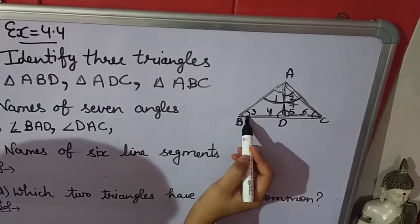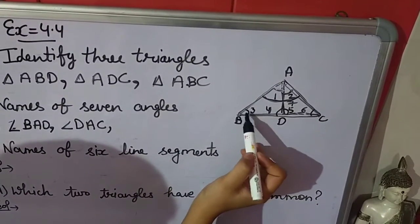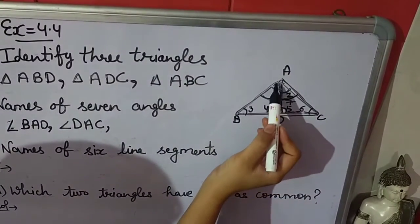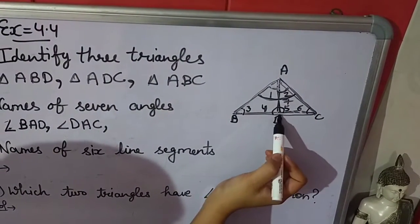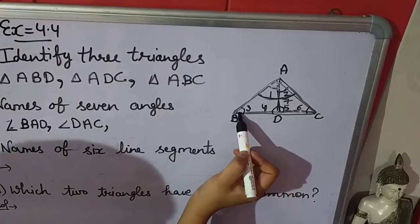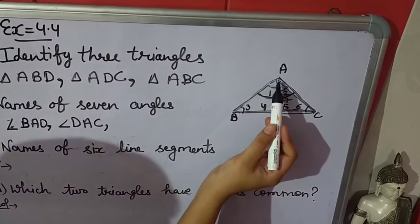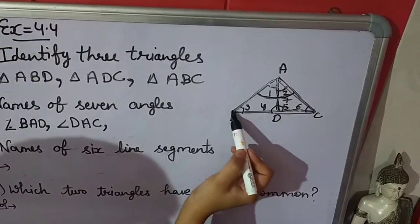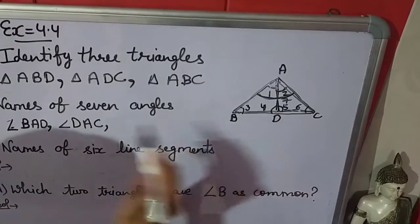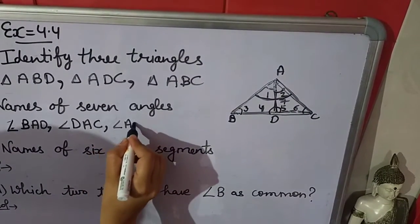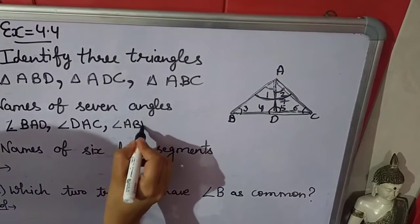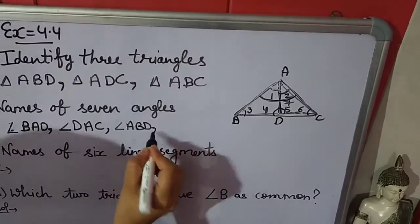Now look at angle 3. What are the arms of angle 3? AB and BD. And B is the vertex. So angle 3 is angle ABD.